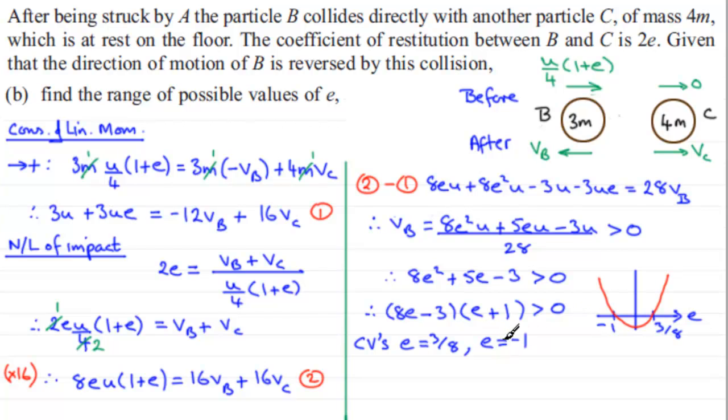But the point is E, the coefficient of restitution, always has to be a positive value. So we can rule out that it's less than minus 1. From the graph we see that E has got to be greater than 3/8. But we've got to be very careful because between particles B and C the coefficient of restitution is 2E. And the coefficient of restitution must be a value that's always positive but also less than or equal to 1, so 2E must be less than or equal to 1.